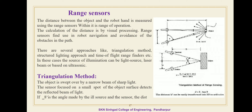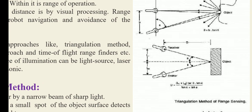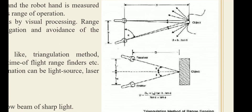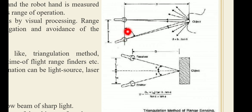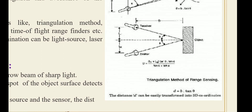The first approach using a range sensor is the triangulation method. This figure shows the triangulation method. It consists of an emitter and a receiver. Here, b is the distance between the emitter and receiver, and d is the total distance between the object and the sensor. You can directly find out distance d by using the triangulation formula: d is equal to b multiplied by tan theta.